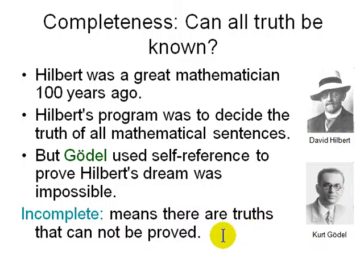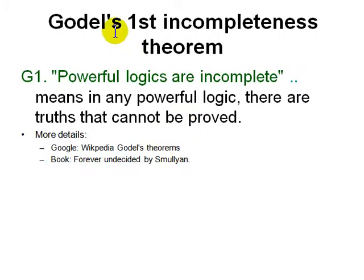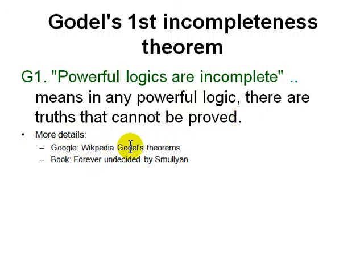Let's look at what Gödel actually meant to say — not the mathematics of it, but just a general idea. He proved two theorems. The first was that powerful logics are incomplete. Powerful means you can represent a lot of knowledge in it — not only the logic itself, but you can talk about the logic within the same logic. And if a logic can talk about itself, then there will be truths that cannot be proved. For more details, look up Gödel's theorems on Wikipedia or read the book by Smullyan, Forever Undecided. It's a very easy book — about 200 pages of puzzles — and if you solve them, you'll understand almost all of Gödel's theorems properly.